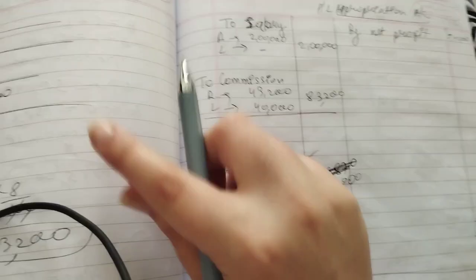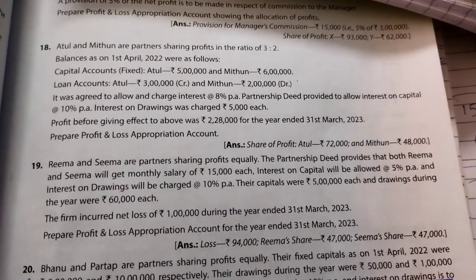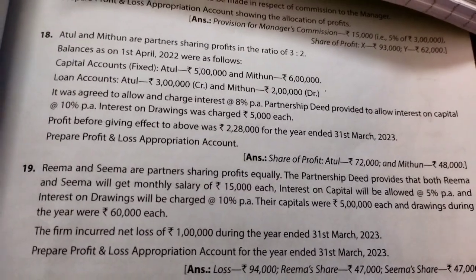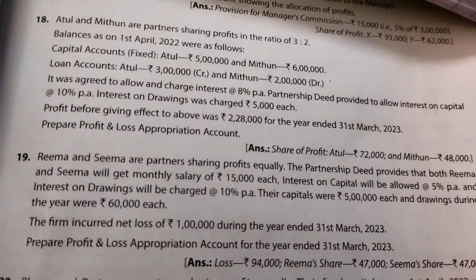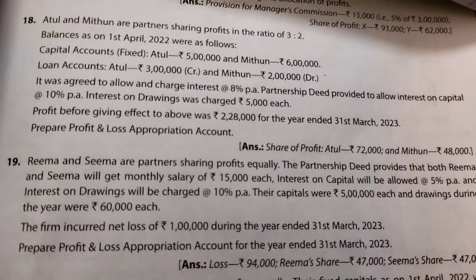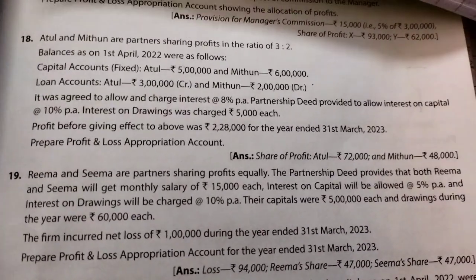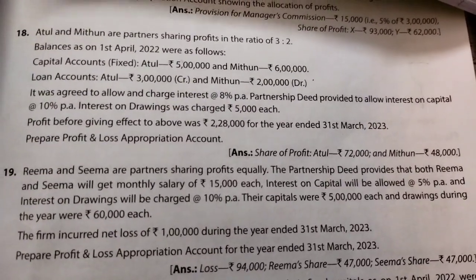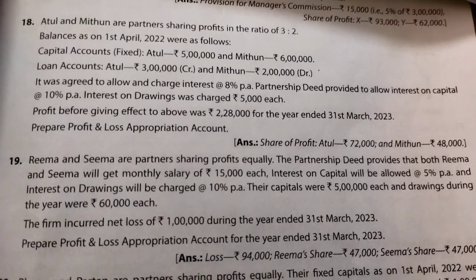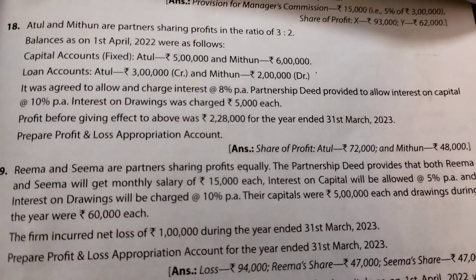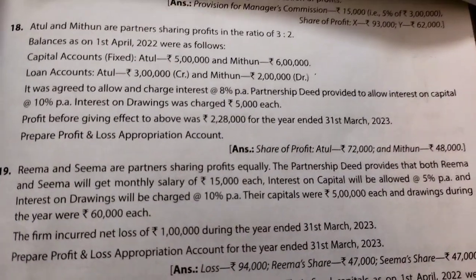Next question: Atul and Midhun are partners sharing profits in ratio 3:2. Balances on 1st April — capital accounts (fixed): Atul 5 lakh, Midhun 6 lakh. Loan accounts: Atul 3 lakh (credit) and Midhun 2 lakh (debit). It was agreed to allow and charge interest at 8% per annum. Partnership deed provides IOC at 10% per annum. IOD was charged at 5,000 each. Profit before giving effect to above was 2 lakh 28,000 for year ended 31st March 2023.